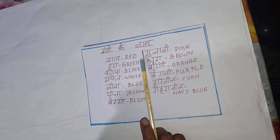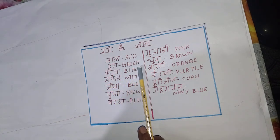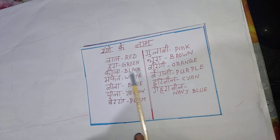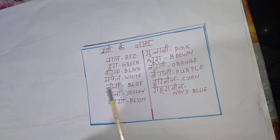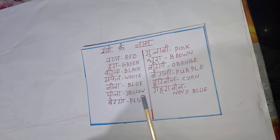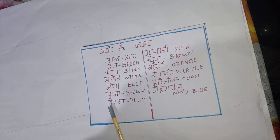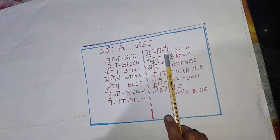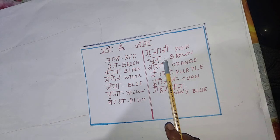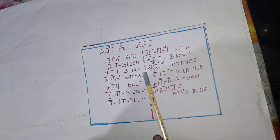Lal, red. Hara, green. Kala, black. Saphed, white. Neela, blue. Peela, yellow. Bangarch, plum. Gulabi, pink. Bura, brown.